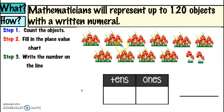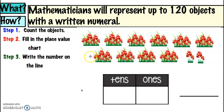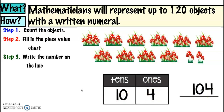Let's continue. Remember we're going to count the objects, fill in the place value chart, and then write the number. We have groups of mushrooms and then we have some single ones. How many groups of tens do we see? On the top we have six, on the bottom we have four, so ten groups of tens. How many ones? We see four ones. Ten tens and four ones will give us one hundred and four.